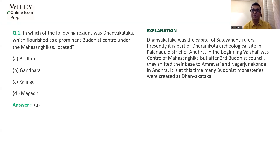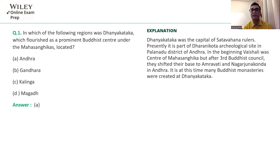At the Third Buddhist Council in 250 BC, patronized by Ashoka, these two branches — Theravada and Mahasangika — were further divided into many branches. Theravada was the original or orthodox sect of Buddhism, patronized by Ashoka. Mahasangikas were not promoted by him, so they started relocating to different parts of the country, majorly in the Andhra region.